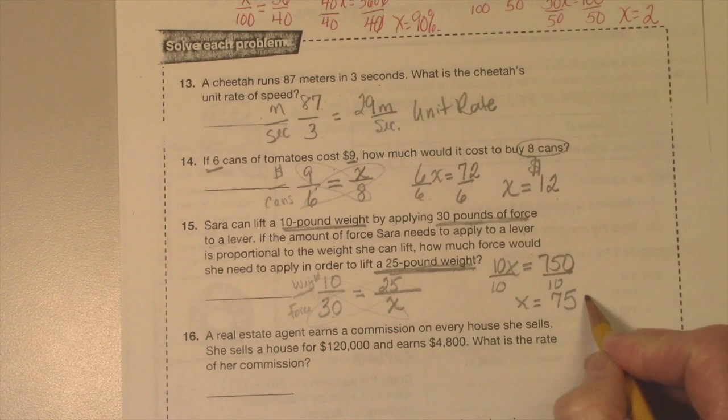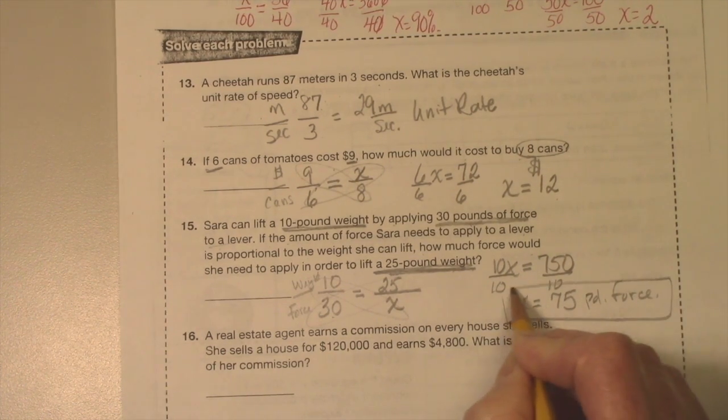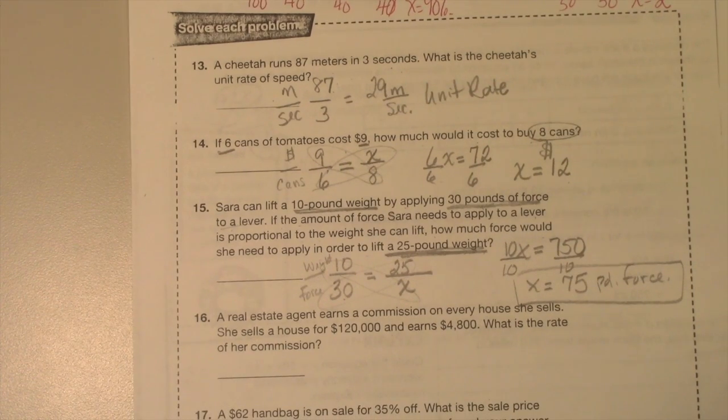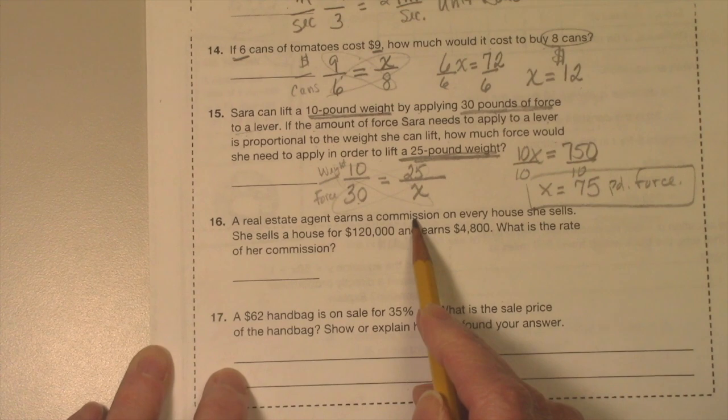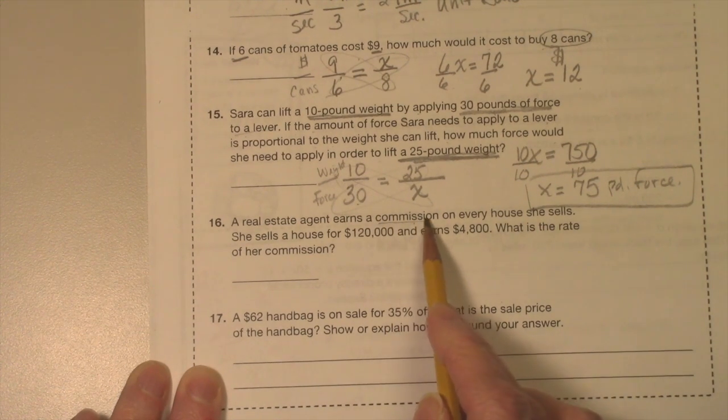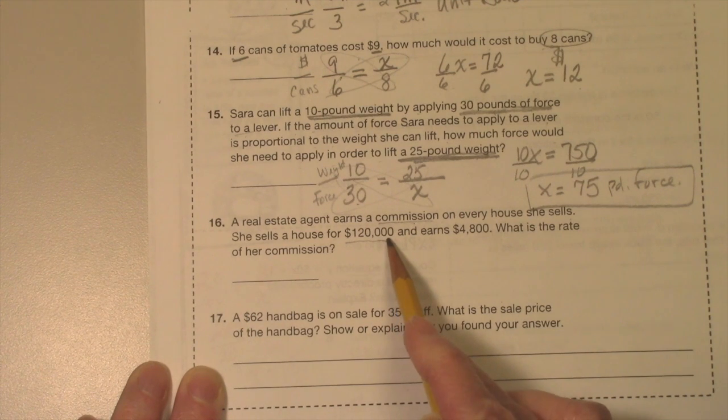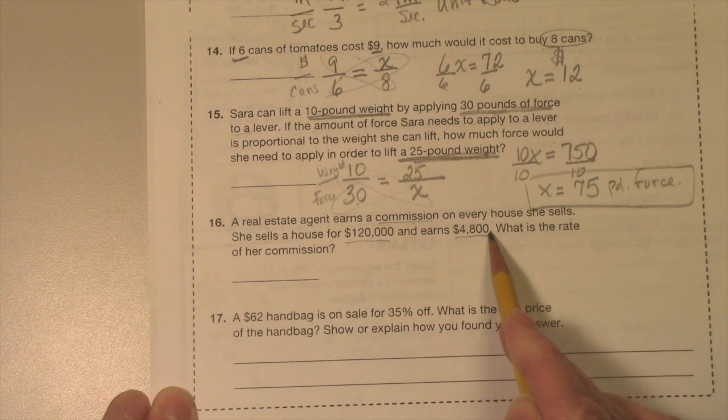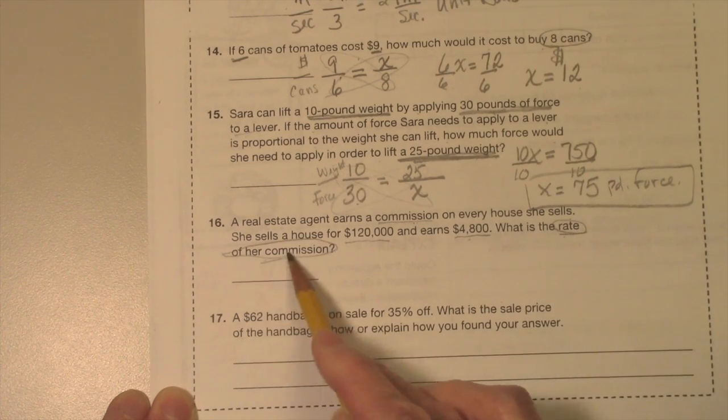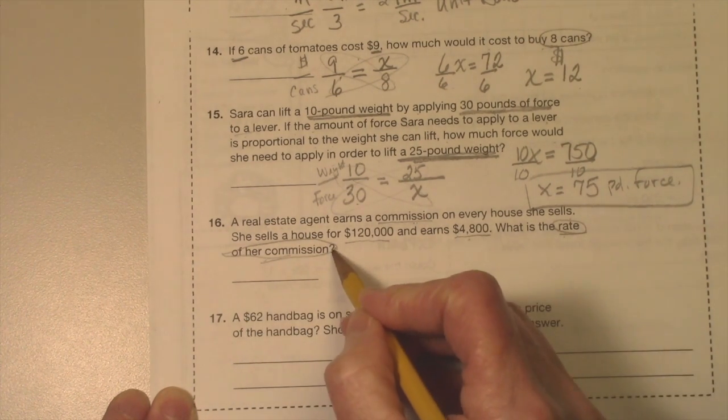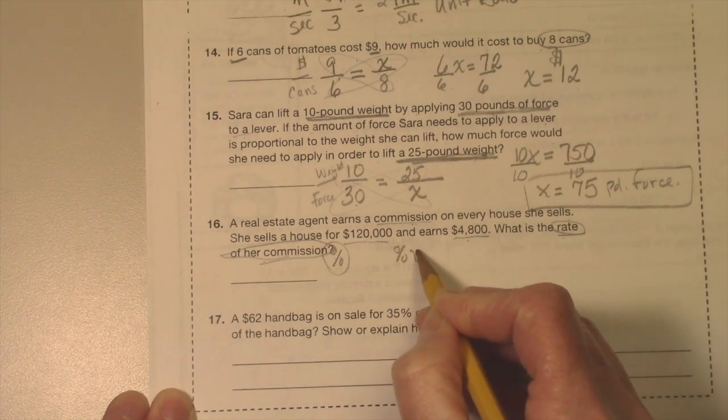Okay, next one. A real estate agent earns a commission. A commission is like what they get paid on a sale. For every house she sells—she sells a house for $120,000 and earns $4,800. That's her commission. What is the rate? Oh, rate of the commission. That means we're looking for the percent. That's the mystery. Percent x, let's call it, over 100.